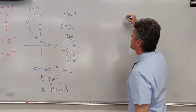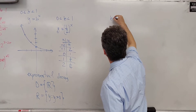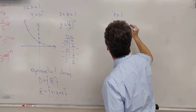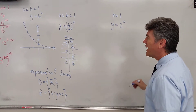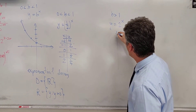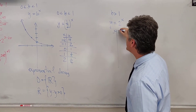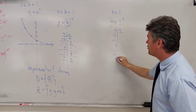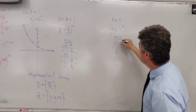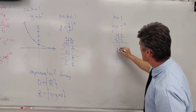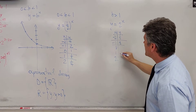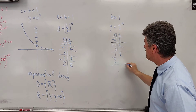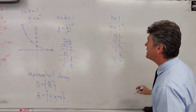Next, let's consider what happens when b is greater than one. We already did this at the very beginning of the lesson with y equals two to the x. I'll just put the table up. When x is negative two, y is one-fourth. When x is negative one, y is one-half. When x is zero, y is one. When x is one, y is two. And when x is two, y is four.